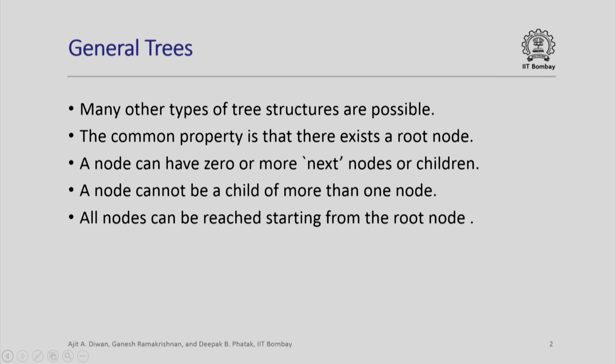We will look at one example of some general type of tree. The common property in all these structures is that there is a starting node called a root node, and a node can have 0 or more next nodes which are called children, but a node cannot be a child of more than one node. Each node has a unique parent and all nodes can be reached starting from the root node by traversing its children, grandchildren, and so on.